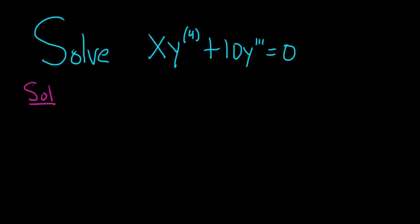The reason is, if you were to multiply everything by x cubed, you would get x cubed times x is x to the fourth. And then here you would get plus 10x cubed y triple prime.